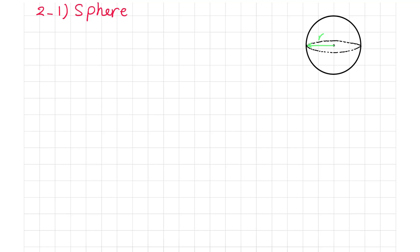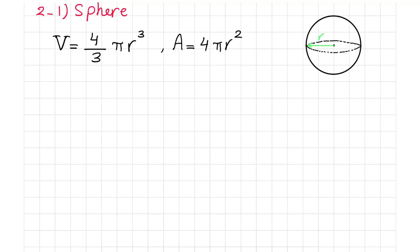The first important three-dimensional shape is the sphere, which has a lot of applications in engineering and mathematics. The volume of a sphere with radius R — which I show in green — is obtained as V equals 4 over 3 times π times R cubed. The surface area of a sphere, meaning the outer surface, is obtained by 4 times π times R squared.